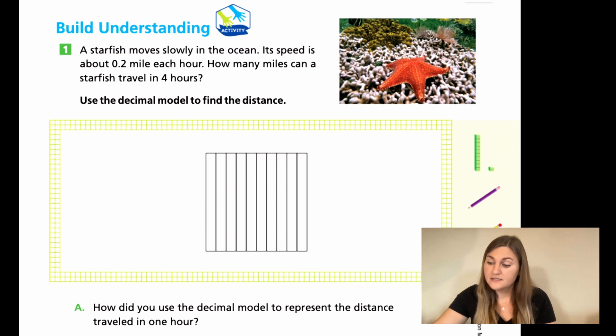So notice the grid is already done for us. We no longer need that giant 100 grid because we're not in the hundredths place value. The 0.2, we're only in the tenths place value, which means we only need 10 bars, not a hundred squares. So go ahead and try to draw and fill in what you would for 0.2 four times. You can use different colors if that'll help you show each hour.